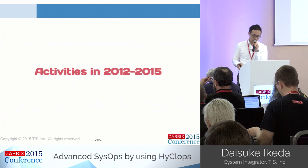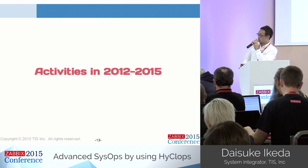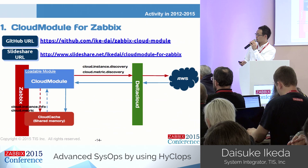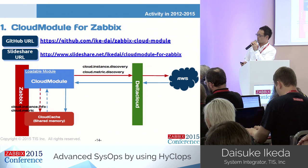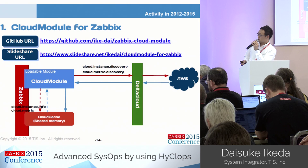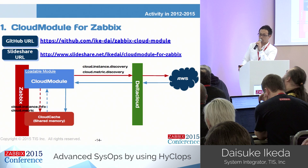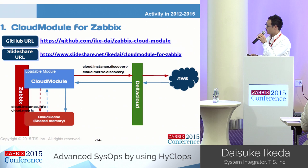Under this concept, we have developed some small trials over these three years. One is the cloud module for Zabbix. This tool collects cloud service statuses — EC2 instance information and CloudWatch information — automatically. It is developed as a Zabbix loadable module. The architecture is similar to that of the Zabbix VMware monitoring. This module consists of a discovery process and cache memory. I have published it on GitHub — please check it.